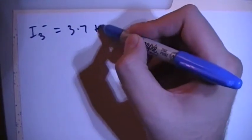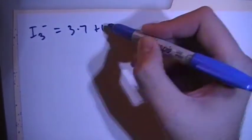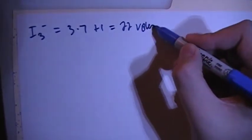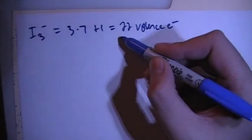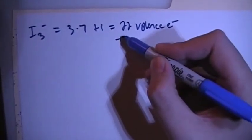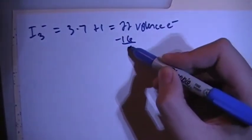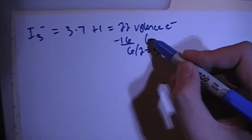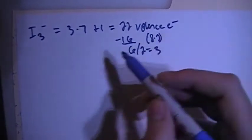Plus one more electron for the charge, so it's going to be a total of 22 valence electrons. Then subtract out the largest multiple of eight, which is 16, which leaves you with six, and divide that by two which gives you three. Since eight times two is 16, this is going to be an AX2E3 molecule.